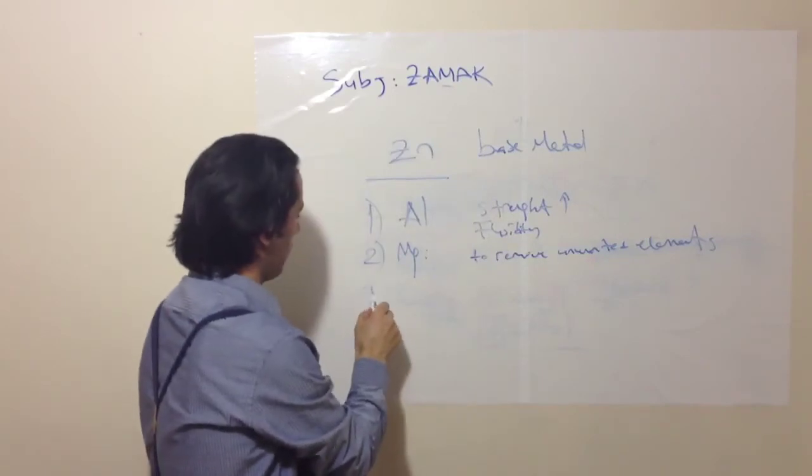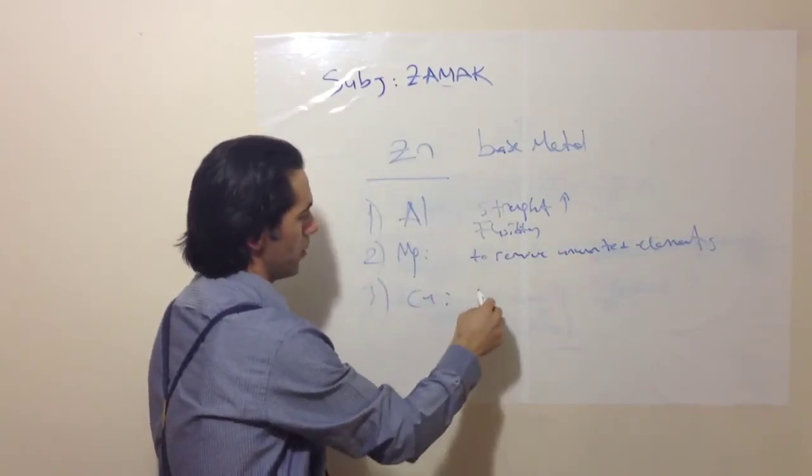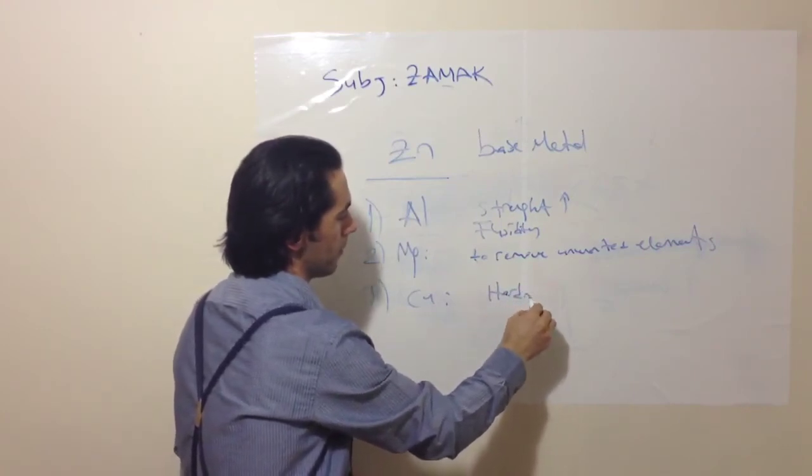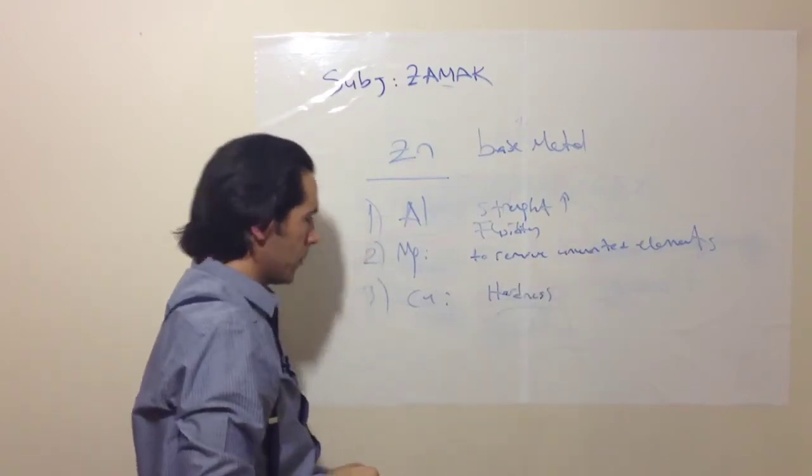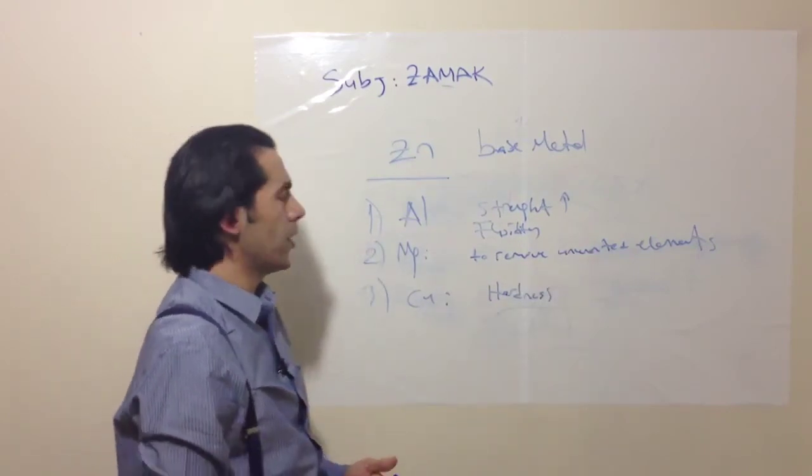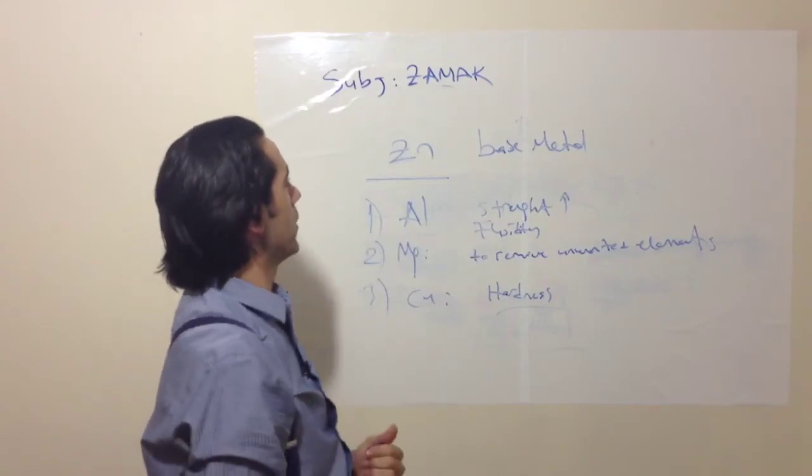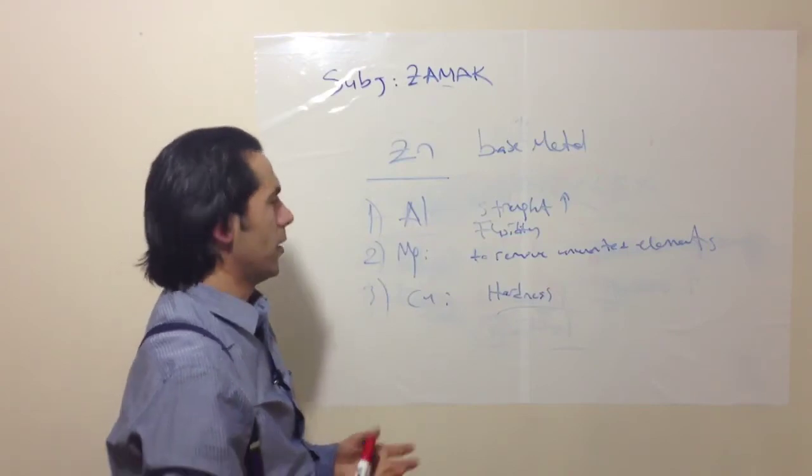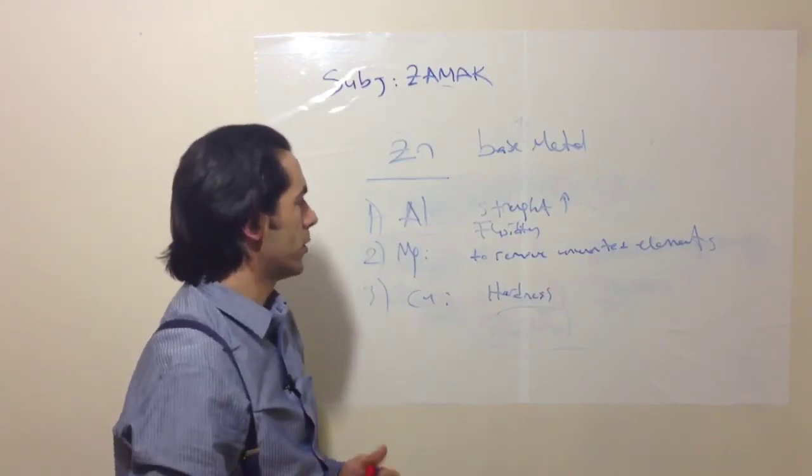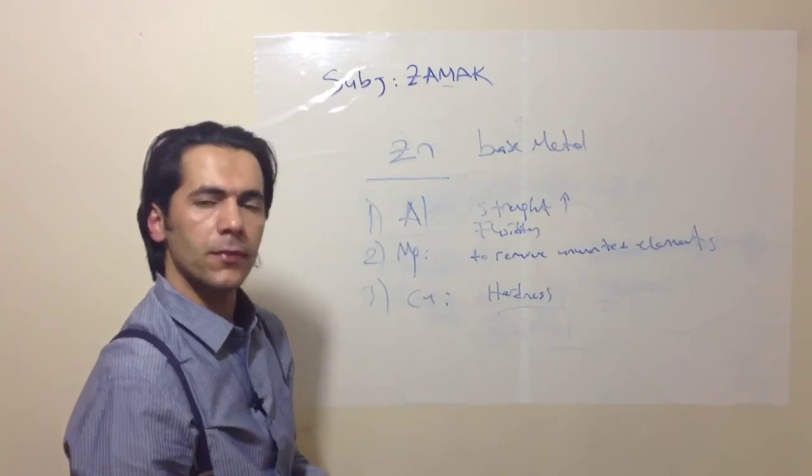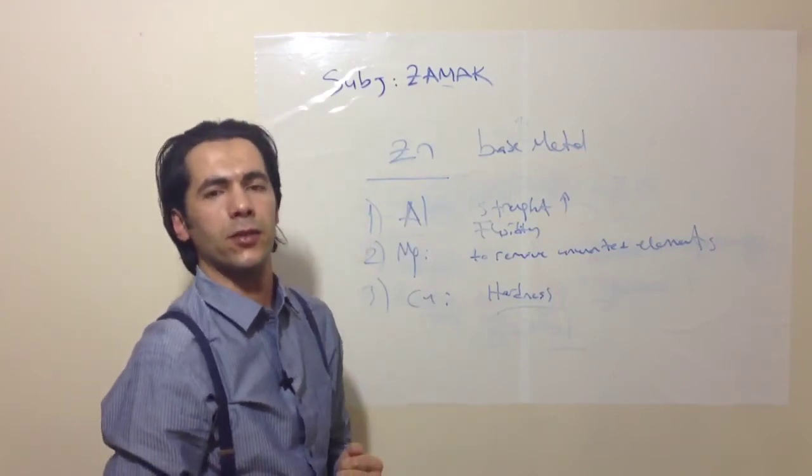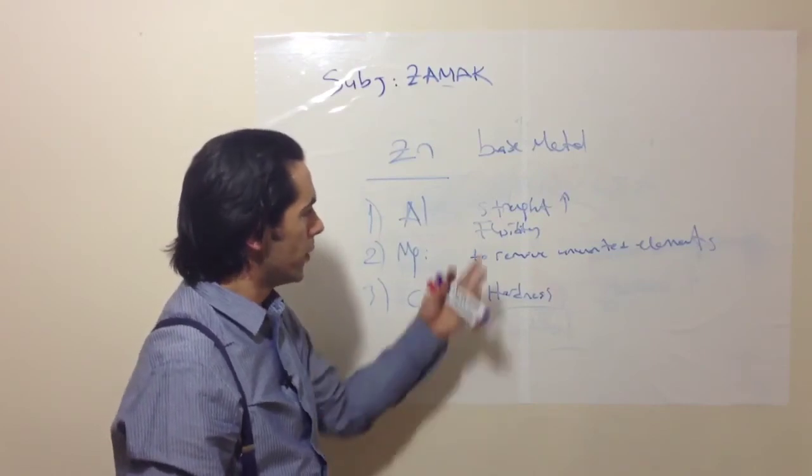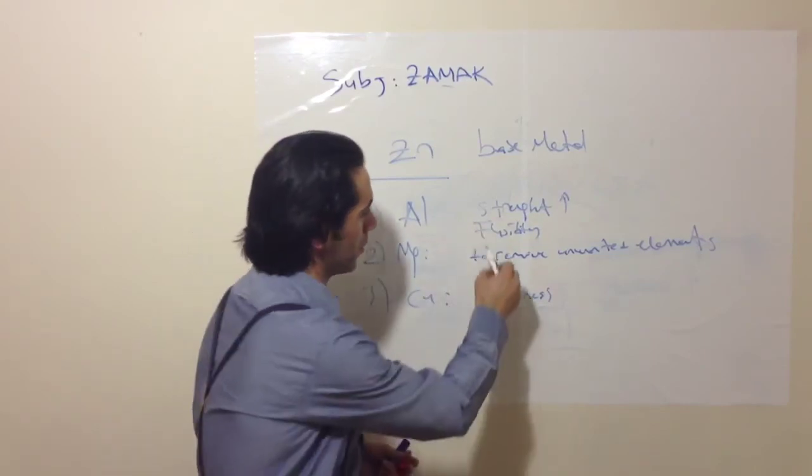And lastly, Copper is used to increase hardness. So we need an alloy other than zinc by itself because it must be strong enough to hold its shapes, or it must be fluid. Because ZAMAK is used in die casting sector, mostly in foundry sector, so fluidity is a very important property for us.